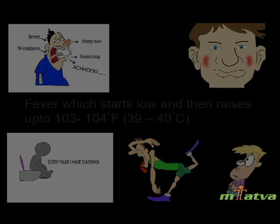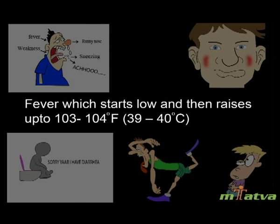Symptoms appear 1 to 3 weeks after infection. People with typhoid experience fever which starts low and then rises up to 103 to 104 degrees Fahrenheit, or 39 to 40 degrees Celsius.